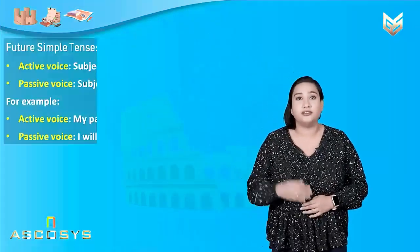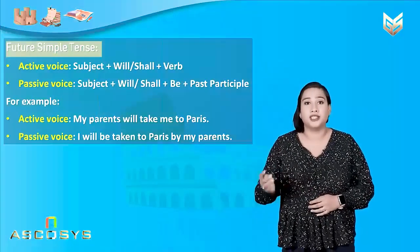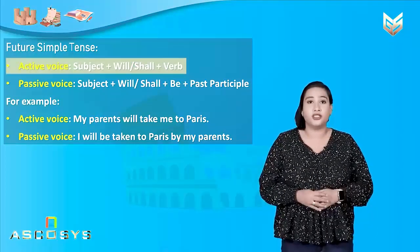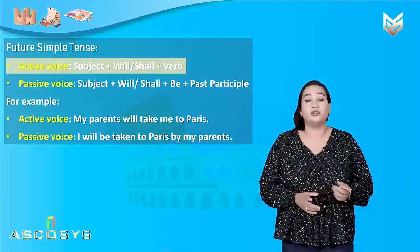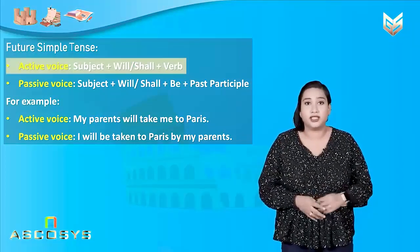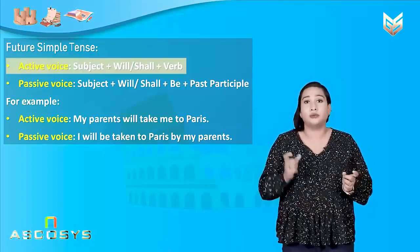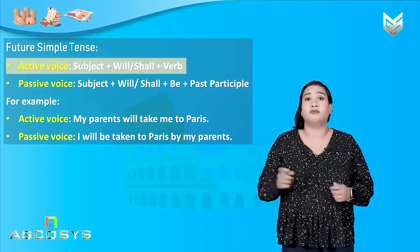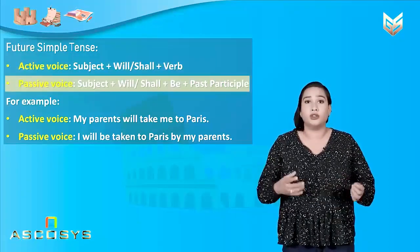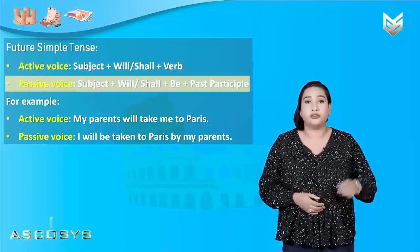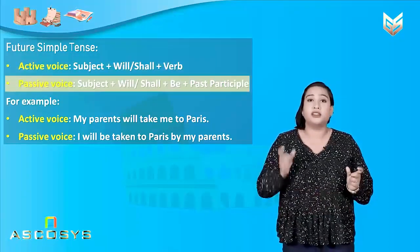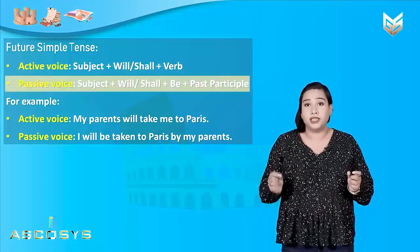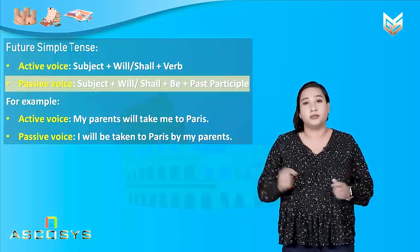Now let us have a look at future simple tense. How do we write a sentence using active voice in future simple tense? First, we will take a subject, we will add 'will' or 'shall' to it, and then we will add a verb. In the passive voice, what we will do is take a subject, add 'will' or 'shall' to it, then add 'be' and a past participle.